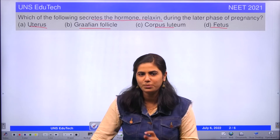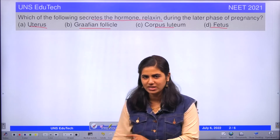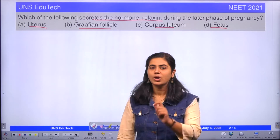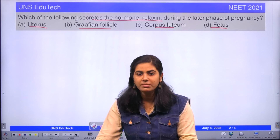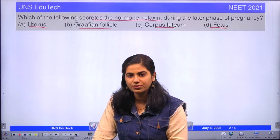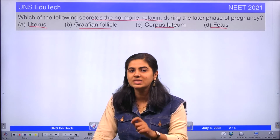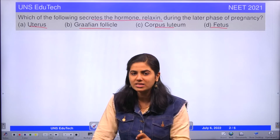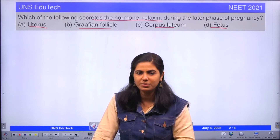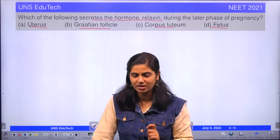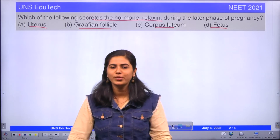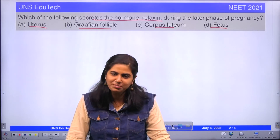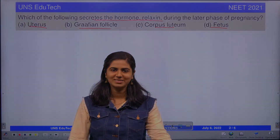The answer is corpus luteum. The corpus luteum, at the later phase of pregnancy, releases relaxin to relax the pelvic ligaments and the cervix. Hope you got the concept. Happy learning.